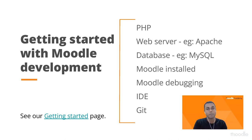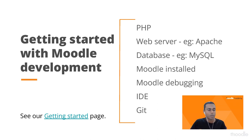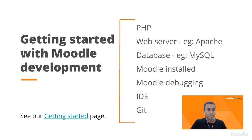Getting started with Moodle development. There are many ways to set up your Moodle development environment — a lot of it depends on the operating system that you use and your personal preferences. But essentially, for a Moodle development environment, you will need to have PHP installed because Moodle is a web-based application written in PHP. You need to have a web server such as Apache, a relational database such as MySQL, and obviously you will need to have Moodle installed. It's recommended to have Moodle debugging enabled in your development environment. To write code, you will need an IDE, and it's recommended to have Git installed so that you can manage your code changes.